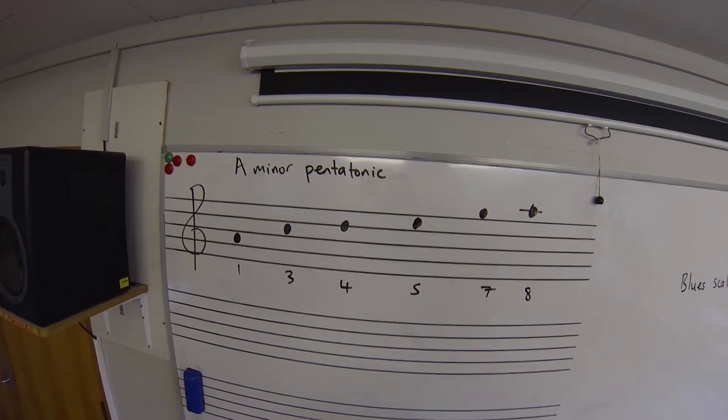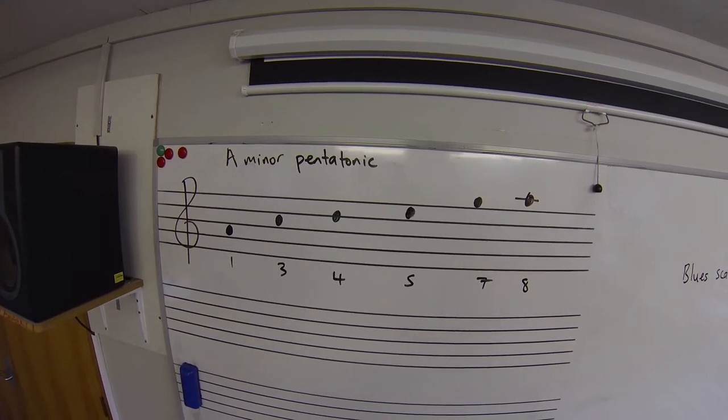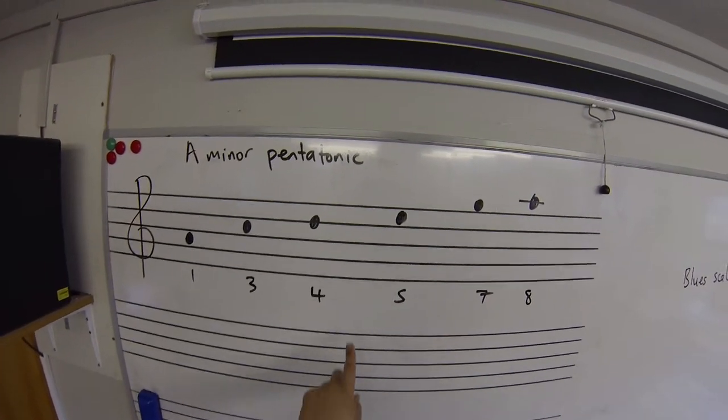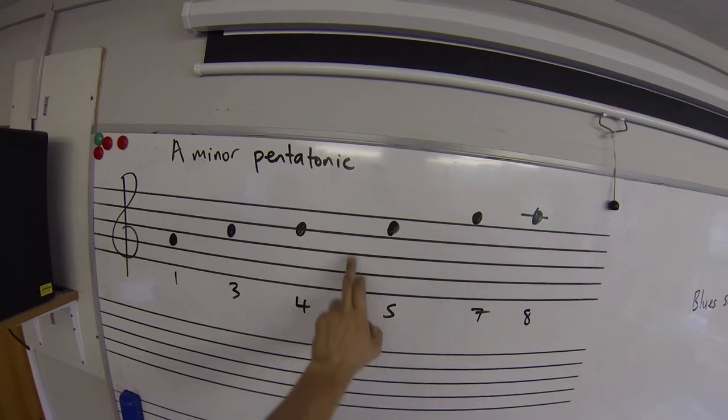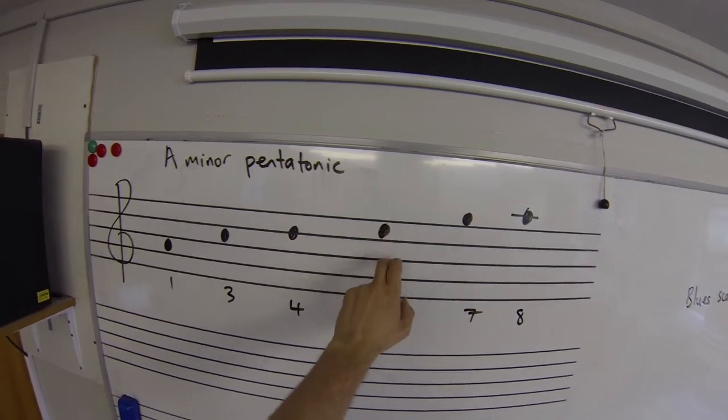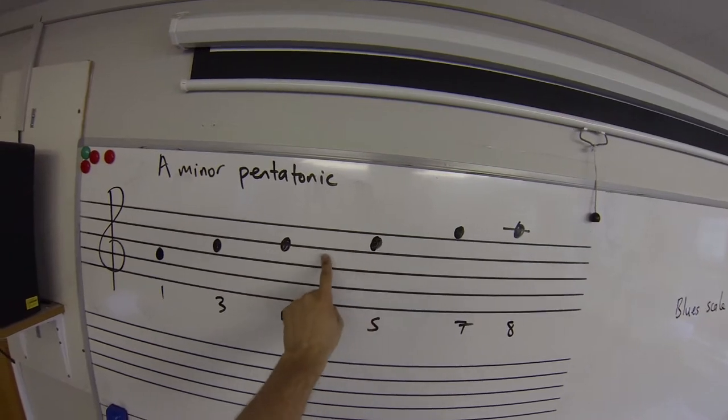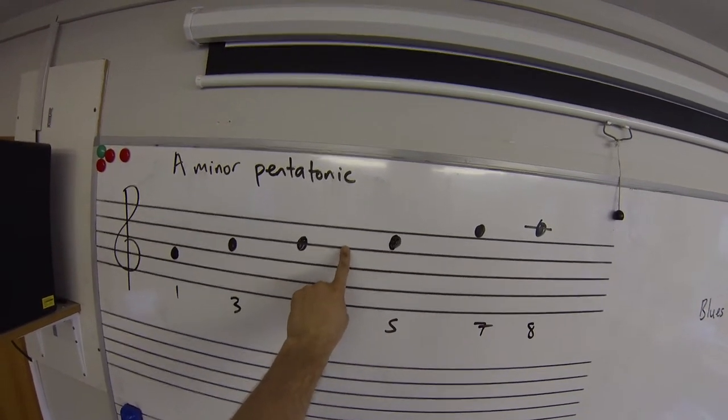All we do to make the A blues scale is add in an extra note right between note 4 and 5. And this here, D to E, it's only two steps on the clock, so there's only actually one note that it can be.